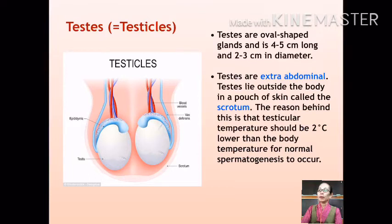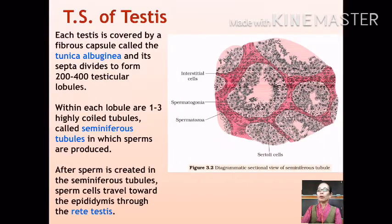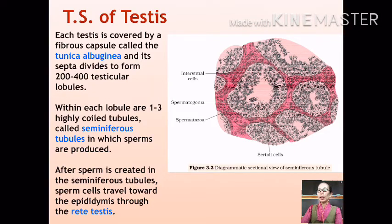Each testes is covered by a tough membrane called the tunica albuginea. The tunica albuginea folds inward to form 200 to 400 testicular lobules. Each testicular lobule has about 1 to 3 highly coiled tubules called the seminiferous tubules, and these are the tubules where sperms are produced.